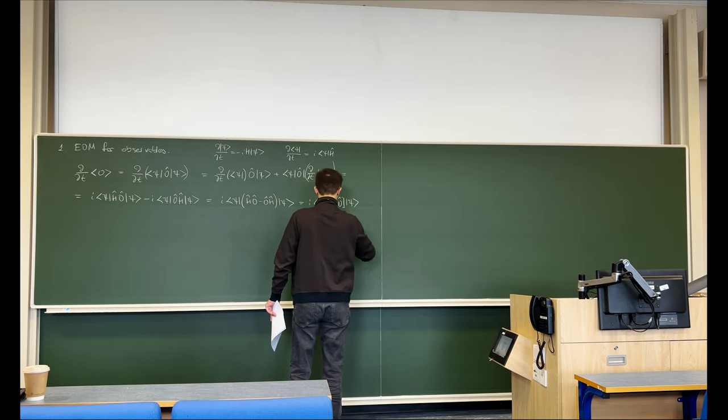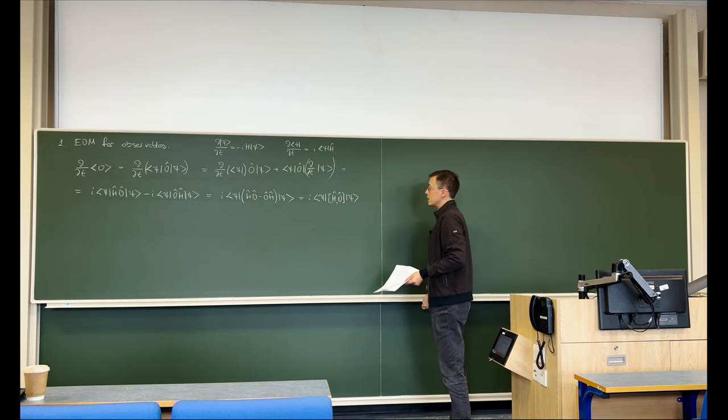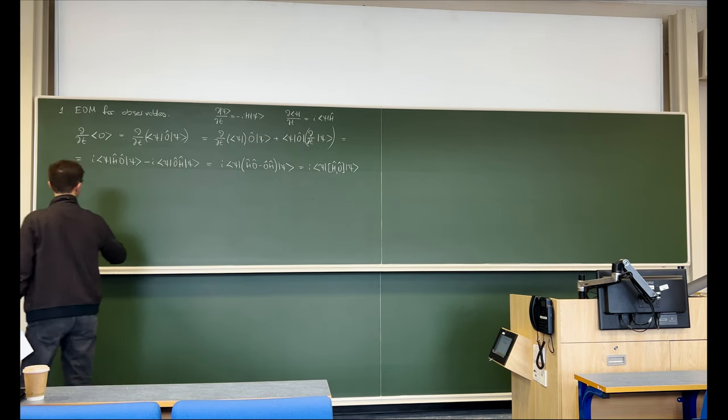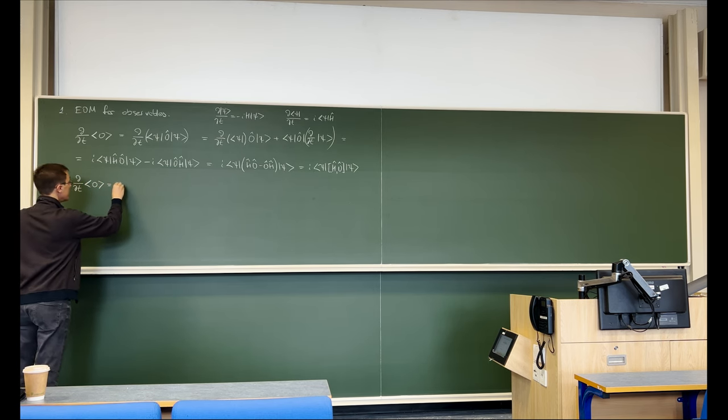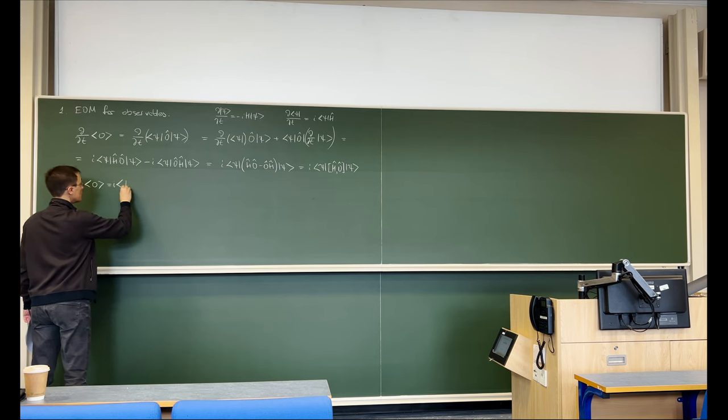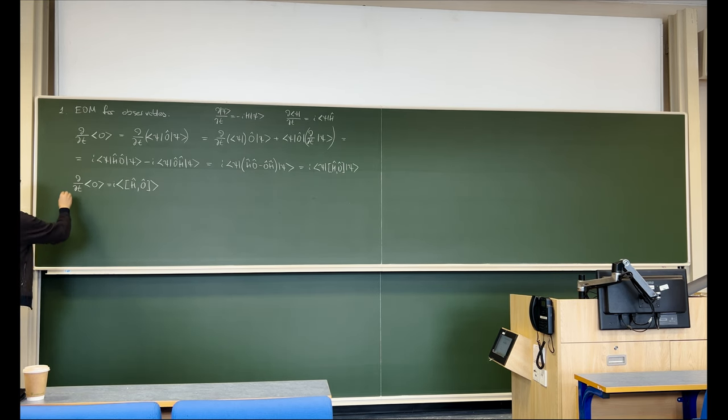And that is just the observable that corresponds to whatever operator this is. And so what we can conclude is that d by dt of the observable is the observable corresponding to the commutator of our operator with the system Hamiltonian. And this is an interesting observation, because notice that the dynamics of every conceivable observable in the system is only a function of its commutator with the Hamiltonian. We eliminated wave functions from the formalism entirely, or density matrices, or in fact any representation of the state.